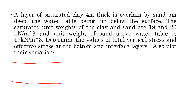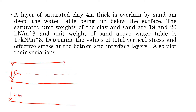Let's look at the first layer of sand and the bottom layer of clay. The four-meter thick clay is overlain by five meters of sand. The water table is at three meters depth. The saturated unit weight of clay is 19 kN/m³, saturated unit weight of sand is 20 kN/m³, and the unit weight of sand above the water table is 17 kN/m³.